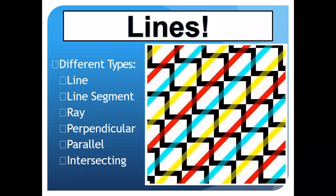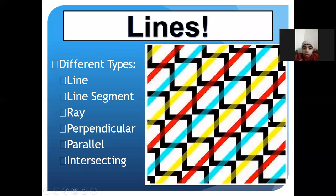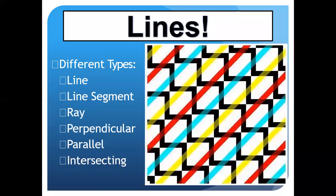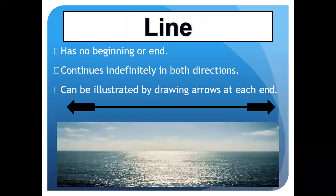You can write these points down in your notebook. The types of lines are: line segment, ray, perpendicular, parallel, and intersecting. Now, what is a line? A line has no beginning or ending — it continues in both directions.